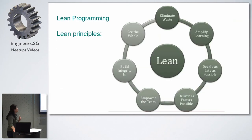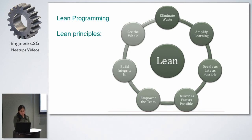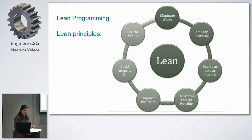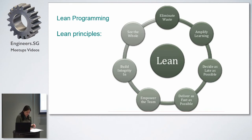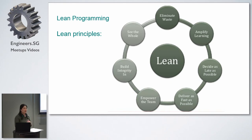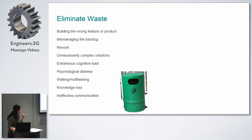Next we look at lean programming. These are the seven lean principles: eliminate waste, amplify learning, decide as late as possible, deliver as fast as possible, empower the team, build integrity in, and see the whole picture. The basic concept of lean programming is to eliminate waste, and this comes from Toyota manufacturing. They identified three types of waste to get rid of: waste itself, overburdening the team, and unevenness of the process.